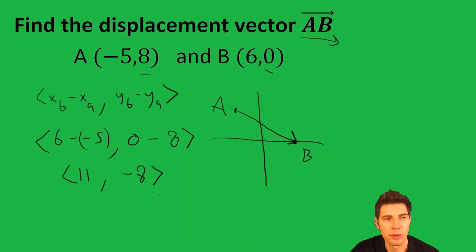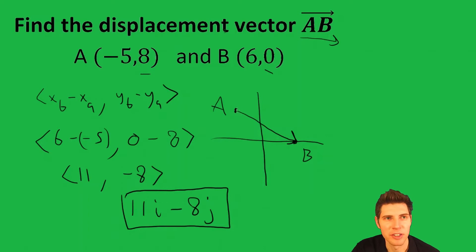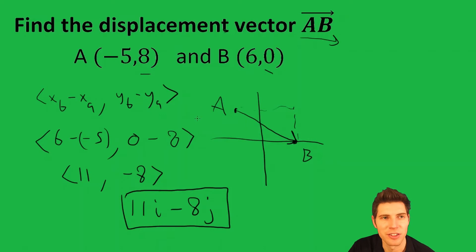So that's one way to write the vector. Another way, you could say 11i minus 8j. And that's the answer to the question. Ultimately, it's saying go 11 to the right and 8 down. And as you notice, that defines the vector we sketched.